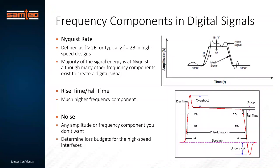When I came to Samtec, I just sort of assumed the high-speed world was digital — zeros and ones — and signals were perfect, which is kind of what I dealt with earlier in my career at megabits per second or a few hundred megabits per second. However, when I came to Samtec and started getting into 28, 56, 112, now 224 gigabits, you start to realize that those digital signals obviously have frequency components in them. One of the terms I was reintroduced to here at Samtec is Nyquist rate or Nyquist frequency. The Nyquist rate is defined as the frequency that's twice the bandwidth, and the majority of the signal energy is at Nyquist, although many other frequency components exist to create a digital signal.